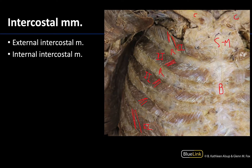Any tendon right here — the external intercostal really just becomes more tendinous in this region, so you kind of lose the muscle bellies the more anterior you get. You really have to pay attention to the fibers of the muscles to be able to differentiate between the two. Fortunately, these fibers are going to be similar to what you see in the external obliques in the abdominal region and the internal obliques, so those muscle fibers will run the same way.